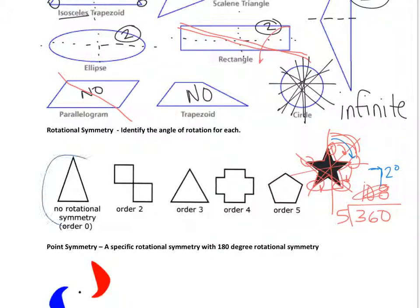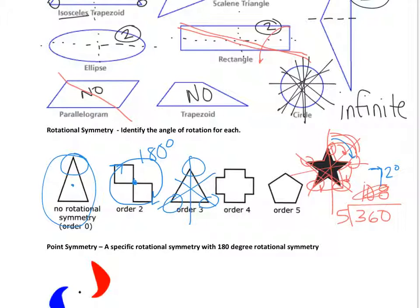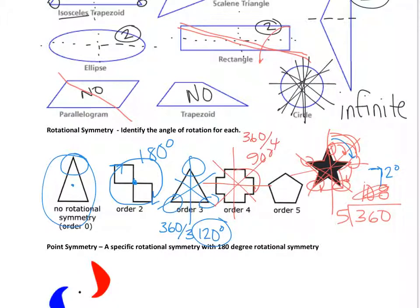A scalene triangle does not have rotational symmetry. A figure with two spokes can be turned 180 degrees and be the same thing. A figure with three spokes: 360 divided by 3 is 120 degrees. A figure with four spokes: 360 divided by 4 is 90 degrees. A five-pointed figure again gives 72 degrees.